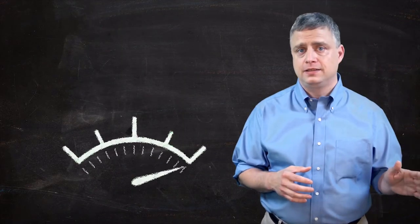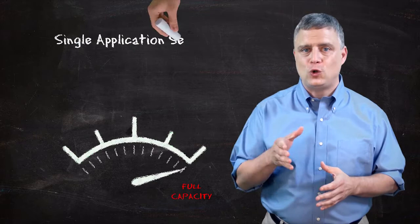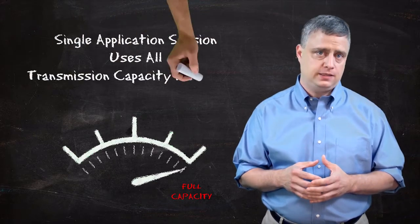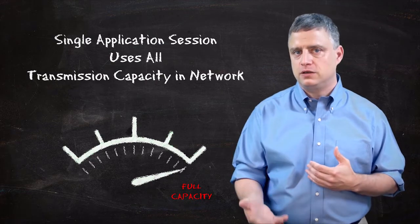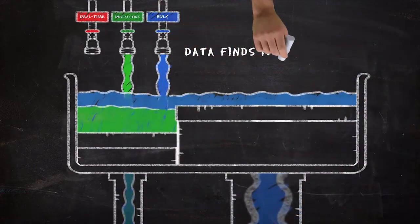If it does not need the capacity, the single application session will only use the best bandwidth it needs and flow around the lower quality bandwidth. Just like gravity compels water to find its lowest level, our data will naturally find its best path.